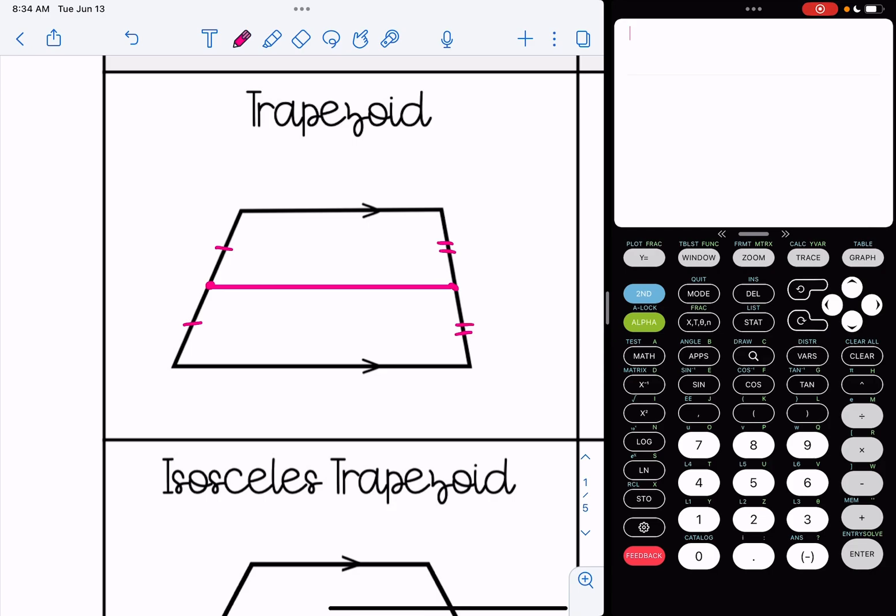So for example, let's say that the top base was 6, and the bottom base was 10. The average of those two numbers is 8, and that would be the length of the median.